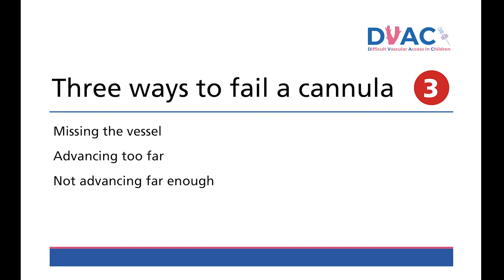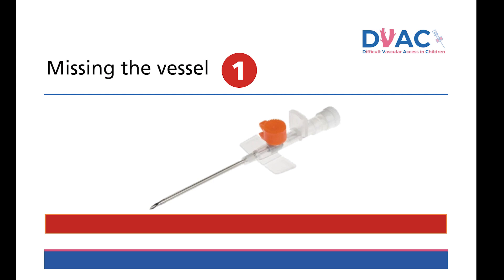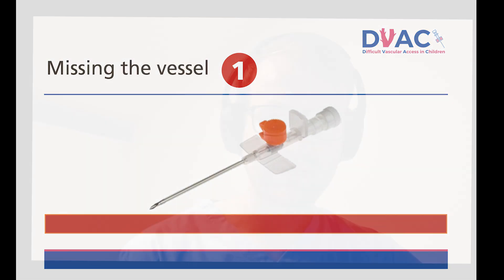I believe there are only three real ways to fail a cannula, which can be helpful to analyse why attempts may have been unsuccessful and allow for properly informed technique adjustments. The first and simplest way is simply not gaining access to a vessel at any point — the most straightforward failure to troubleshoot as the vessel won't have been traumatised. Don't fish around too much; remove the cannula, get set up again, and take your time to properly align with an appropriate vessel. Proper lighting, patient preparation and positioning, cannula grip, skin tension, and advancing slowly can all minimise chances of outright missing a vessel.